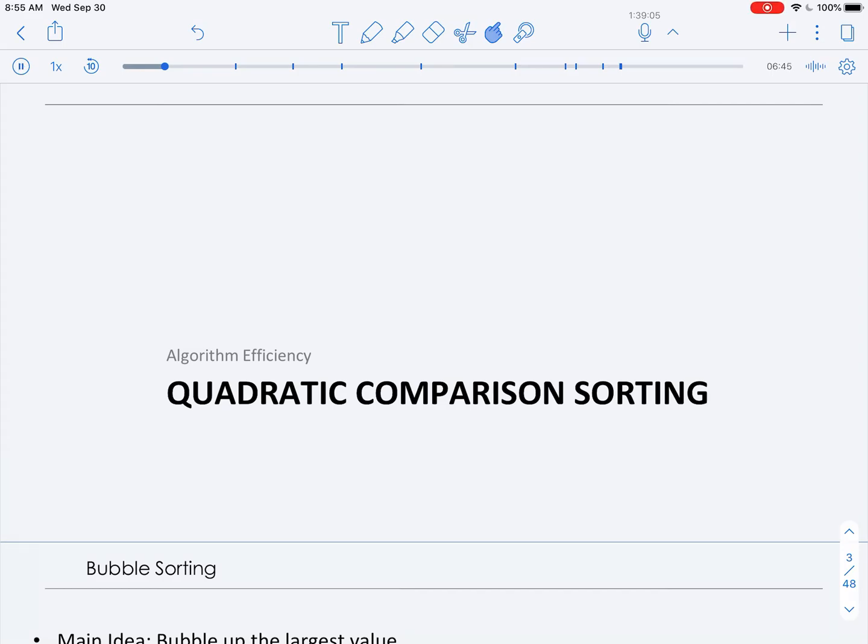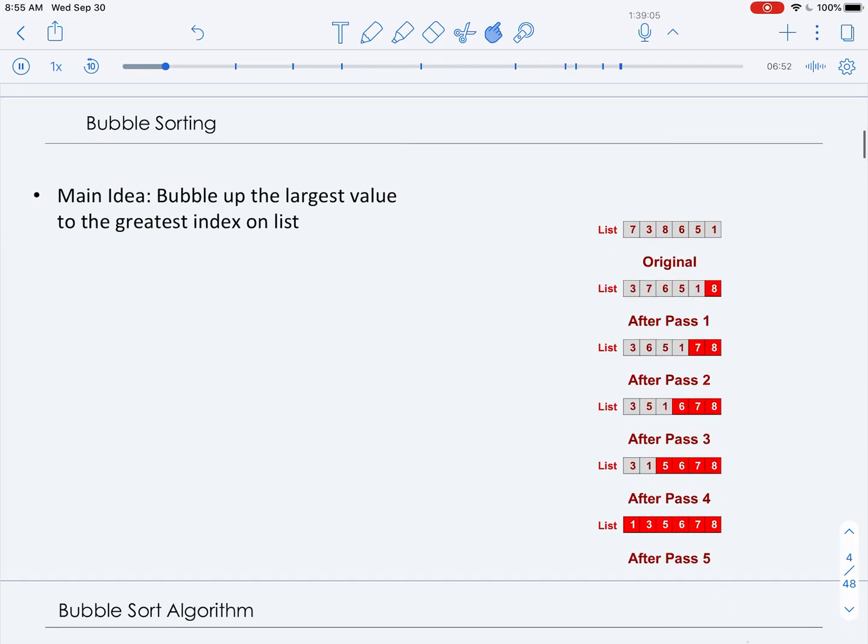In this video, we'll begin our discussion of quadratic comparison sorting algorithms with bubble sort. As the name suggests, on each iteration of bubble sort, we bubble up the largest value in the unsorted integers in our list up to the greatest index. So in our diagrams, we start off with the entire list unsorted in gray, and we put the elements that are considered sorted as red.